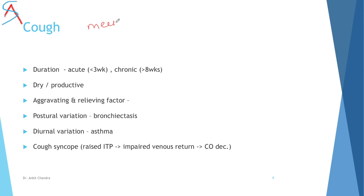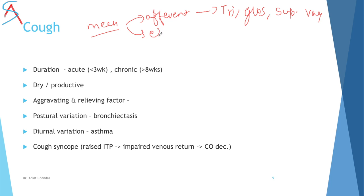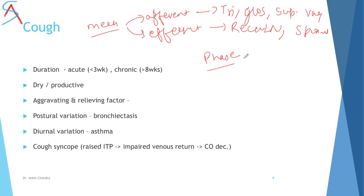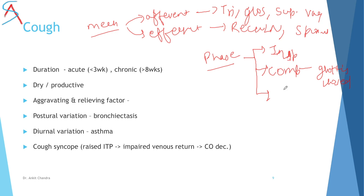The next symptom is cough. Understand the mechanism: the afferent pathway for cough is via the trigeminal nerve, glossopharyngeal nerve, superior laryngeal nerve, and vagus. The efferent pathway is via the recurrent laryngeal nerve and spinal nerve. Cough occurs in three phases: the inspiratory phase, where about 2.5 liters of air is inhaled; the compressive phase, where the glottis is closed; and the expiratory phase, where the glottis opens and air is expelled.